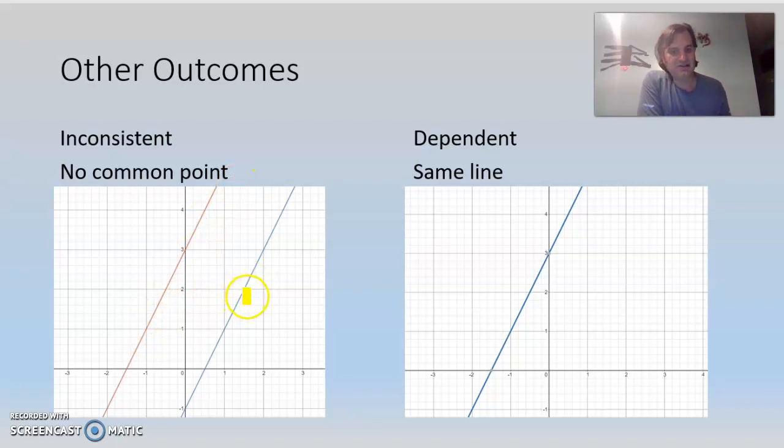They look just like two straight lines with the same slope. So they have no common point, which means they don't have a solution. We call this inconsistent, and sometimes we'll write that as an empty set. It looks like a zero with a slash through it.